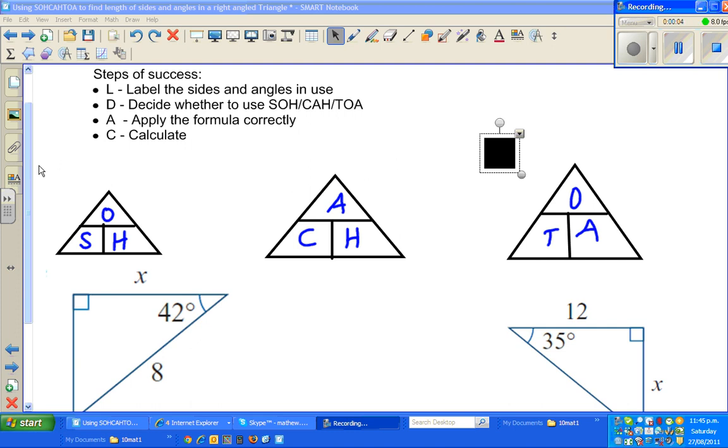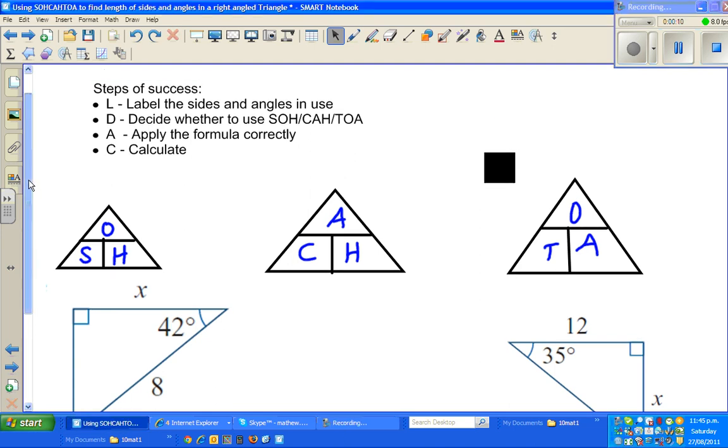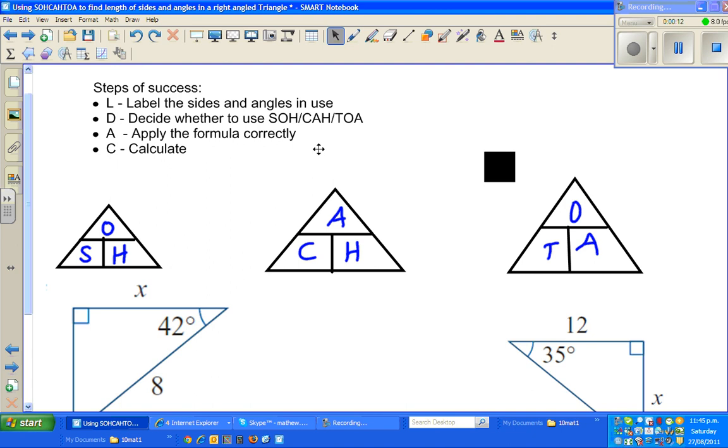Continuing in the M series of finding sides and angles of a right angle triangle using SOH CAH TOA. This is the third video in the same series. As I've discussed in the previous videos,